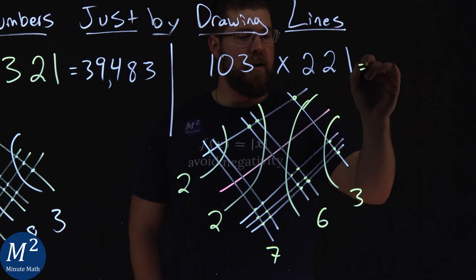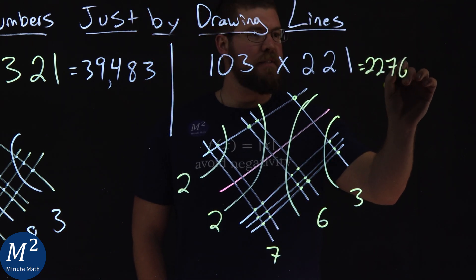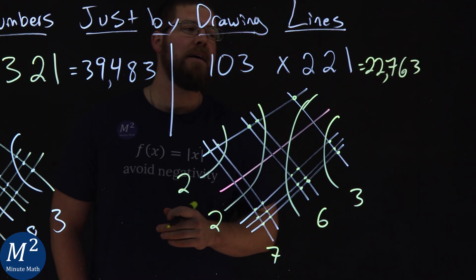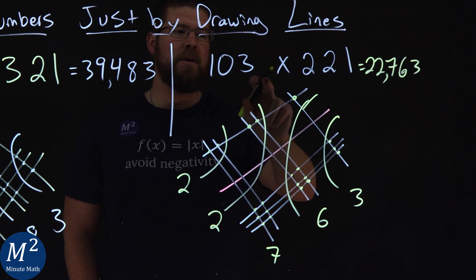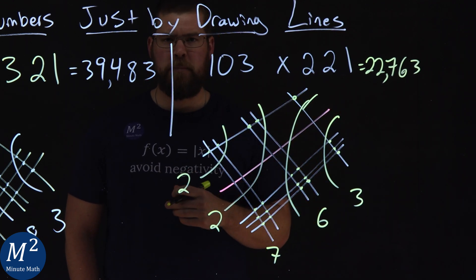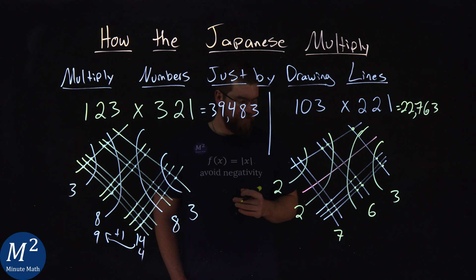This one's nice and easy. And, our answers are 2, 2, 7, 6, 3. So, 22,763 is 103 times 221. Now, I'm going to go erase this. And, we'll go see how we can do this with algebraic expressions.